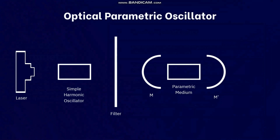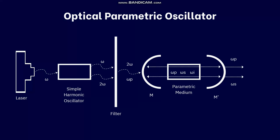In the Optical Parametric Oscillator, a laser wave of frequency omega is pumped into a simple harmonic oscillator where it splits into omega and 2 omega. Using a filter, only 2 omega — which is the pump wave omega_p — passes through. When this wave omega_p is incident onto the nonlinear medium, it splits into omega_s and omega_i, the signal and idler frequencies respectively.